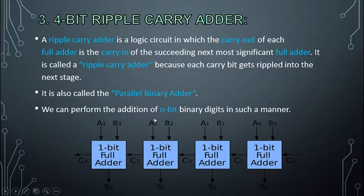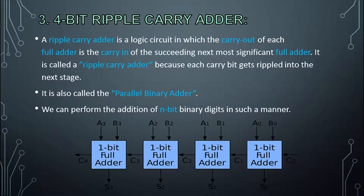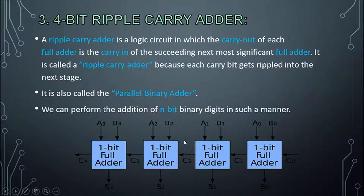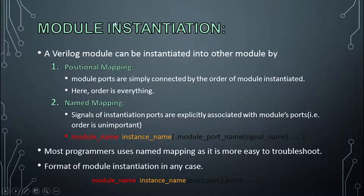That's why they are called a ripple carry adder, also known as the parallel binary adder. From this ripple carry adder we can perform the addition of n-bit binary digits. In a half adder we can only add single-bit binary numbers, and the same is true for a full adder. But if we need to add 4-bit, 5-bit, or 6-bit binary numbers, we require a ripple carry adder.